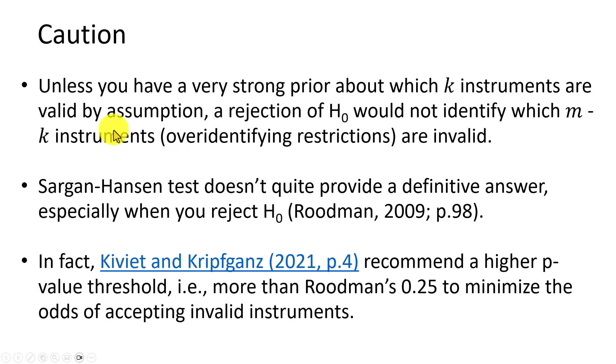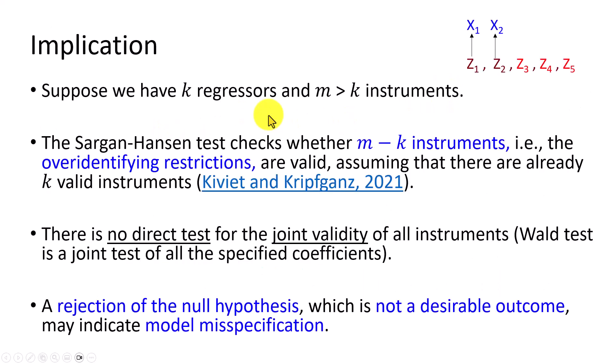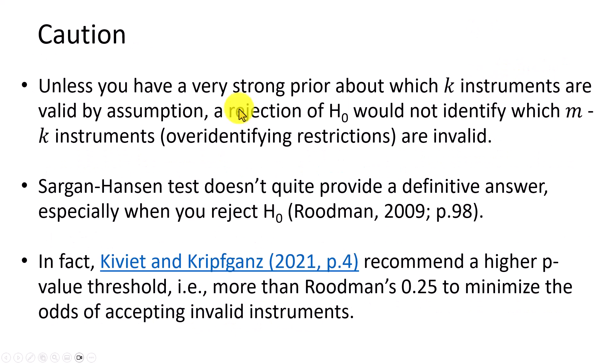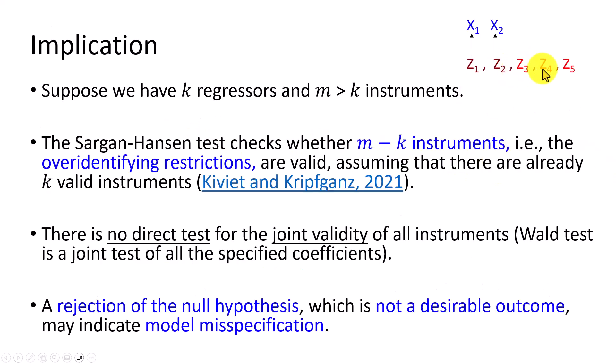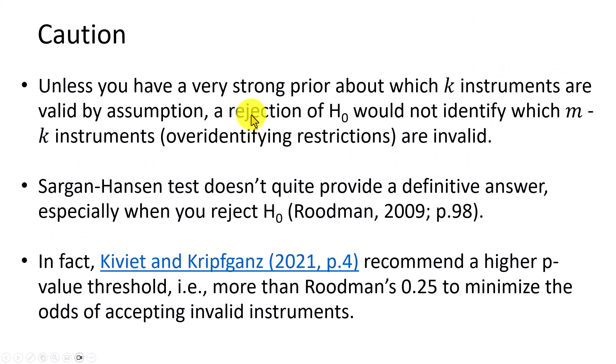But the cautionary note here is as follows. Unless you have a very strong prior about which k-instruments are valid by assumption, in other words z1 and z2, a rejection of the null hypothesis would not identify which of those over-identifying restrictions are valid. It's not going to tell us which of these three are invalid if we reject the null hypothesis. The Sargan-Hansen test doesn't quite provide a definitive answer, especially when you reject the null hypothesis. And there's a reference here, in fact, Kiviet and Kripfganz, I hope I got that pronunciation right, recommend a higher p-value threshold, that is more than Roodman's 0.25, in order to minimize the odds of accepting invalid instruments.